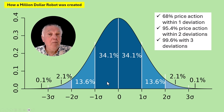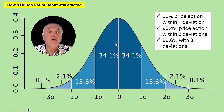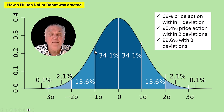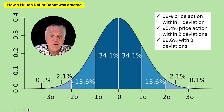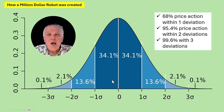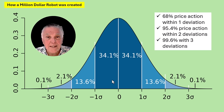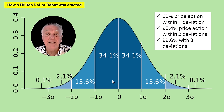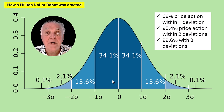You don't want to trade at the average because you don't know what direction the price is going, but if the price moves away to that deviation level you've got a very good chance it will move back to the average. If it goes to the next deviation, the probabilities are so much stronger. That's the theory — we're going to see this in action and how it makes this robot generate a million dollars.